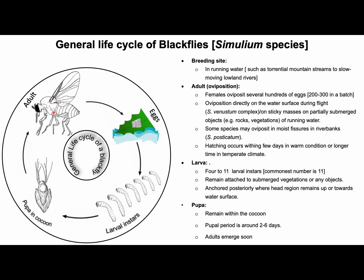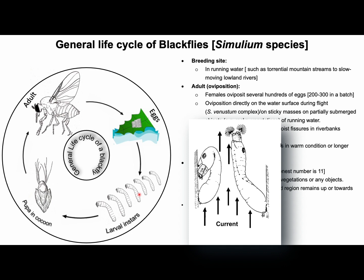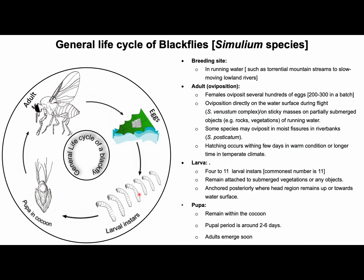Some species may oviposit in moist fissures in river banks. These eggs are highly sensitive to desiccation. Hatching of eggs takes a few days in warm conditions, but may take longer in temperate areas. There are 4 to 11 larval instars in the life cycle of black flies — the most common number is 11. Larvae normally remain attached to submerged vegetation or objects in water, anchored posteriorly with the head towards the water surface. Pupae of black flies don't feed, and the pupal period is around 2 to 6 days, after which adult flies emerge.